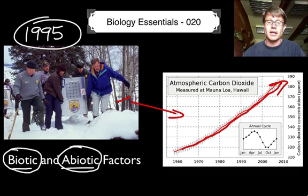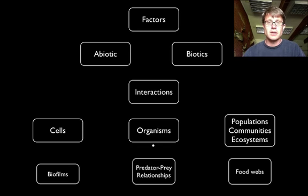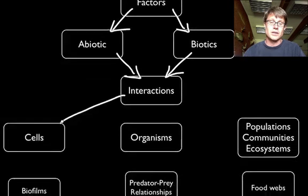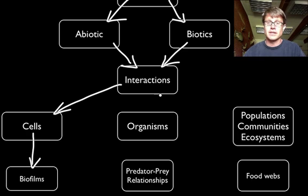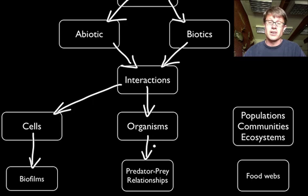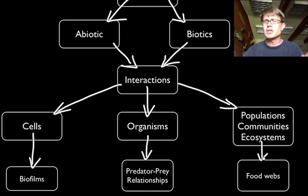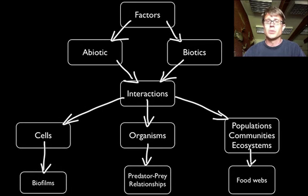Both biotic and abiotic factors are going to affect organisms, populations, and ecosystems. The factors I'm going to talk about — living and non-living — affect interactions between cells. The example I'll give is biofilms that form as a result of abiotic factors. At the level of organisms I'll discuss the predator-prey relationship — how one organism can affect the population of another. And finally at the ecosystem, population, and community level, I'll show you how interconnected an ecosystem can be, and how one tiny change in a food web can have huge repercussions.